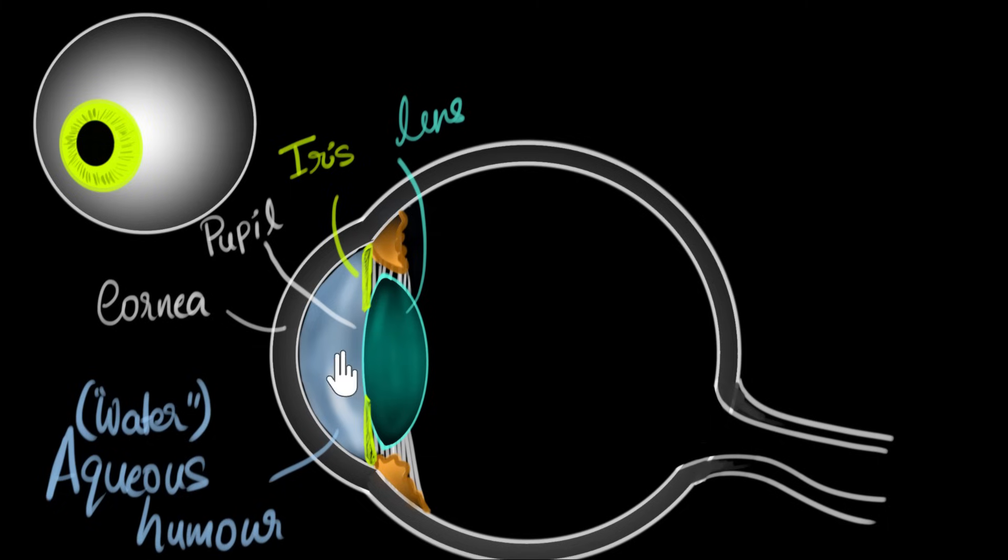And if you look at this carefully, we can now see that this cornea along with the aqueous humor and the lens, they're all convex shaped. So the cornea and the lens together form a converging lens system.